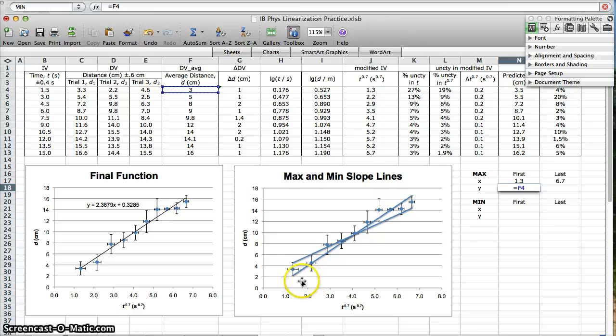But the max slope line doesn't start at the first y value. We've gone down to the bottom of the first error bar. The error bar represents this uncertainty of plus or minus 1 centimeter. So to go to the bottom of the error bar, we have to subtract that uncertainty. Minus, in the equation bar, so minus g4.